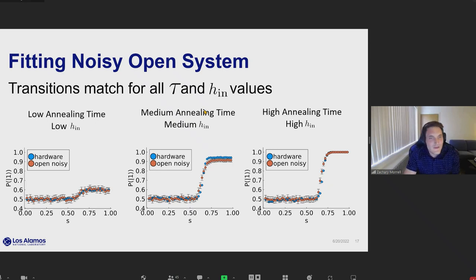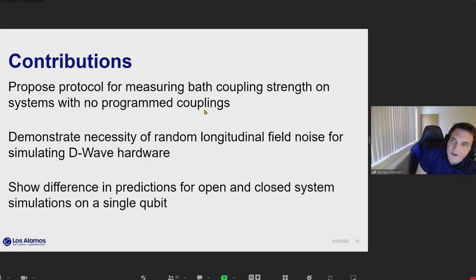With that, I'll go ahead and continue to my overall contributions and conclude. In this work, we've proposed a new way of trying to quench a D-Wave system and finding a way to measure both the strength of the bath coupling and the longitudinal field noise term which we consider. We also have demonstrated that it's necessary to include this longitudinal field noise term and lastly, we've shown a difference for open and closed system dynamic models using only a single qubit. With that, I'll open the floor for questions. Thank you.